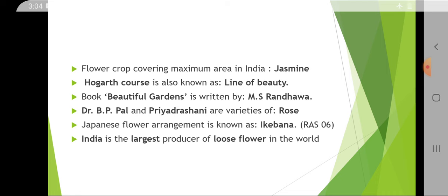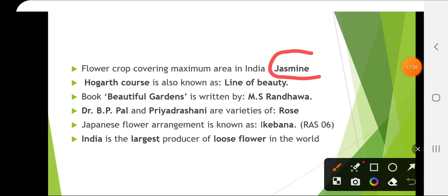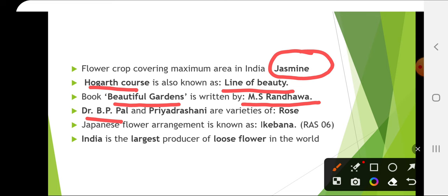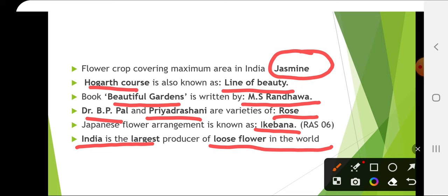The flower crop covering maximum area in India is jasmine, though you should check the latest information. Hogarth's curve is known as the line of beauty. The book 'Beautiful Gardens' was written by M.S. Randhava. Dr. B.P. Pal is an important rose breeder, and the varieties Dr. B.P. Pal and Priya Darshani are varieties of rose. Japanese flower arrangement is known as Ikebana. India is the largest producer of loose flowers in the world, used mainly for religious purposes and festivals.